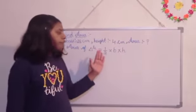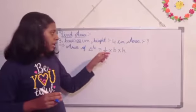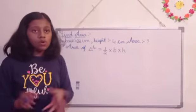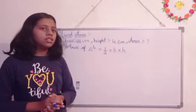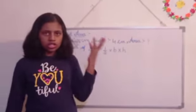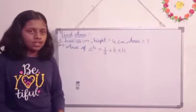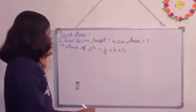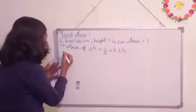So here, half into base into height, the multiplication symbol is there, you know, that is compulsory to be written in the next step. Got it? And H is also called as perpendicular height. Got it? So the next step we are going to do, that is,